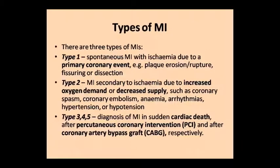MI is classified into types 1 through 5. Type 1 MI is due to a primary coronary event — plaque rupture. Type 2 MI is ischemia secondary to an imbalance in demand and supply: demand is increased or oxygen supply is reduced. Causes include coronary spasm, coronary embolism, anemia, arrhythmia, hypertension, or hypotension.